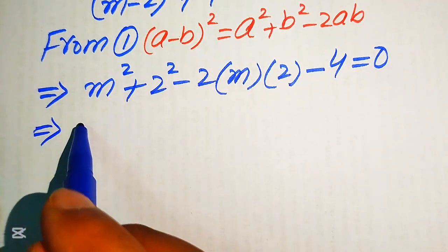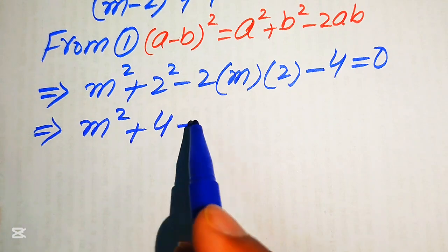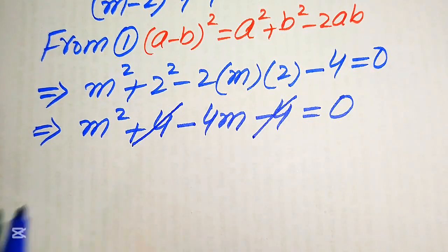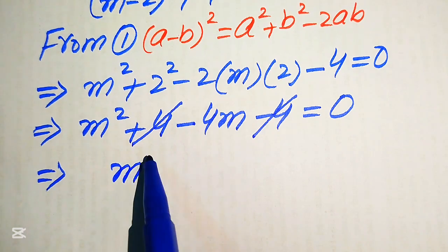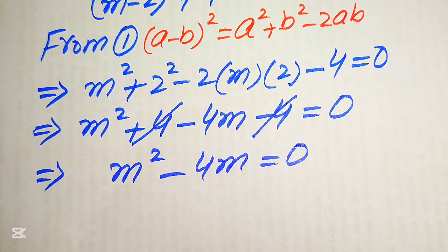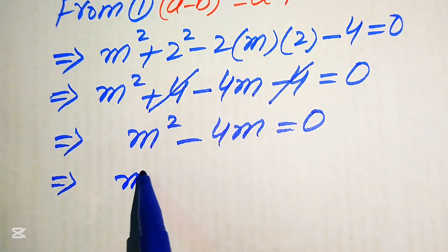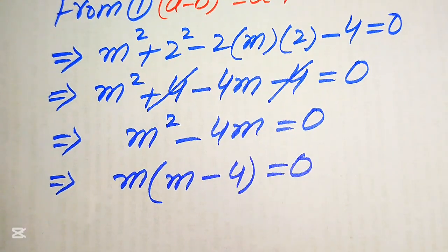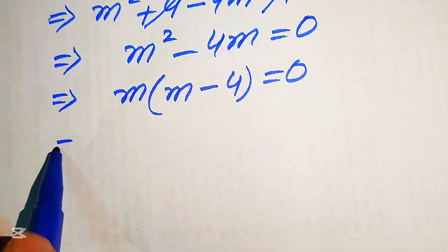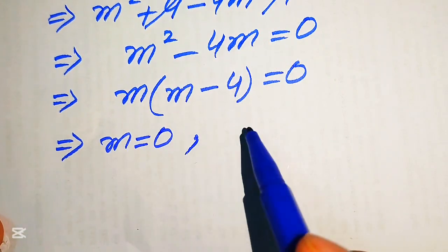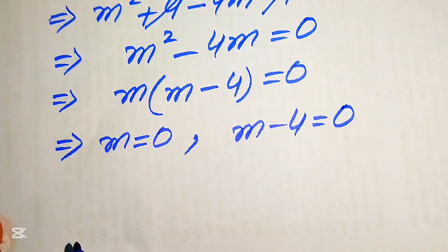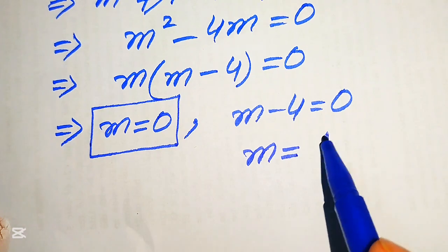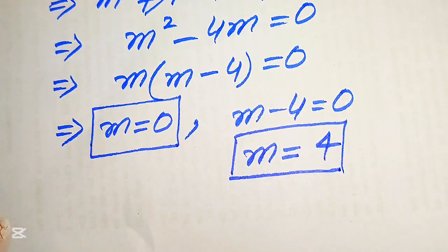Simplifying, the plus 4 and minus 4 cancel out, leaving m squared minus 4m equals 0. Factoring out m gives m(m minus 4) equals 0. This splits into m equals 0 and m equals 4, which are the two real roots of the equation.